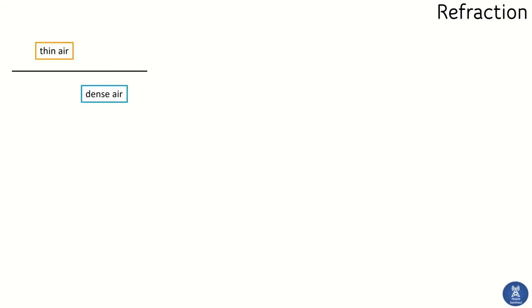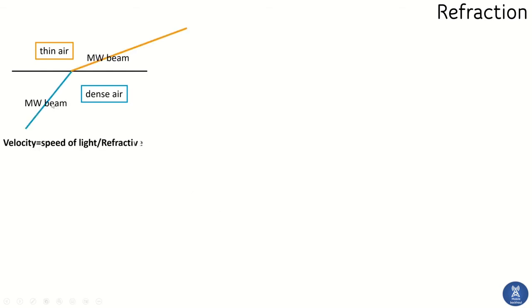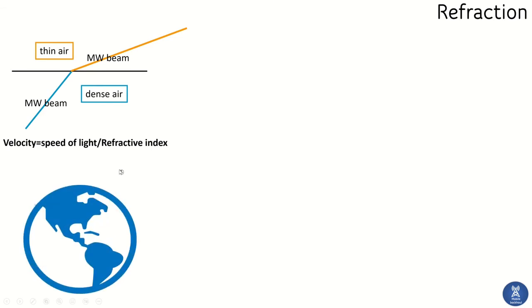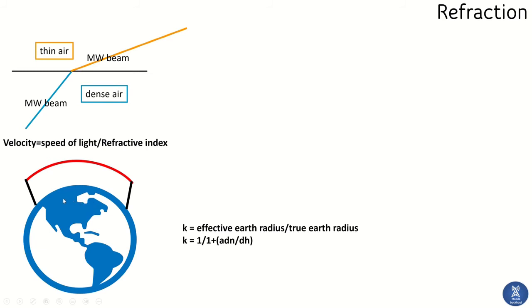The next topic is refraction. Refraction is the bending of the microwave beam. Its effect on microwave communication is that it causes the microwave beam to move either upward or downward from its line-of-sight path, meaning the receiver antenna may not be able to capture the microwave energy. Similar to light, when a microwave beam travels from a denser to a thinner medium it bends, and this bending is compared with the radius of the Earth's curvature.